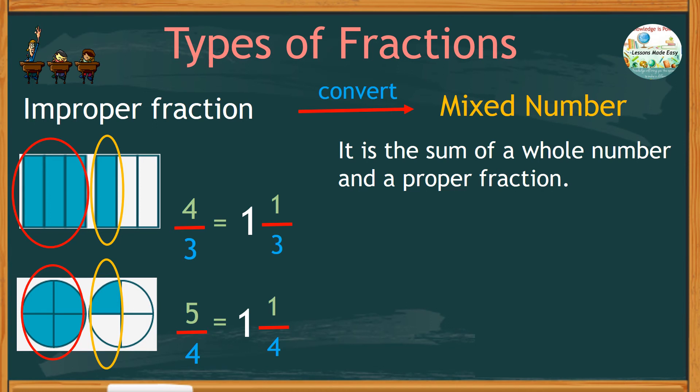But how about if the given fraction is purely numbers, like 9 over 4? How do you convert this improper fraction into a mixed number?